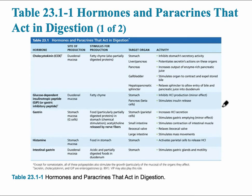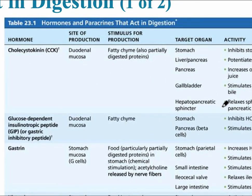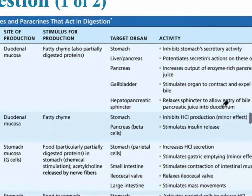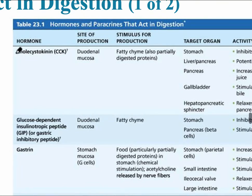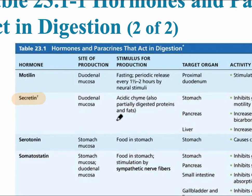The next slides summarize the important hormones and paracrines that act in digestion. It's important to know the hormone, where it's produced, what stimulates its production, and its activity. Two key ones to highlight: CCK, cholecystokinin, is secreted from the duodenum mucosa and released when fatty chyme is present. Secretin is an additional enterogastrone, also secreted from the duodenum mucosa, but triggered by acidic chyme rather than fatty chyme.